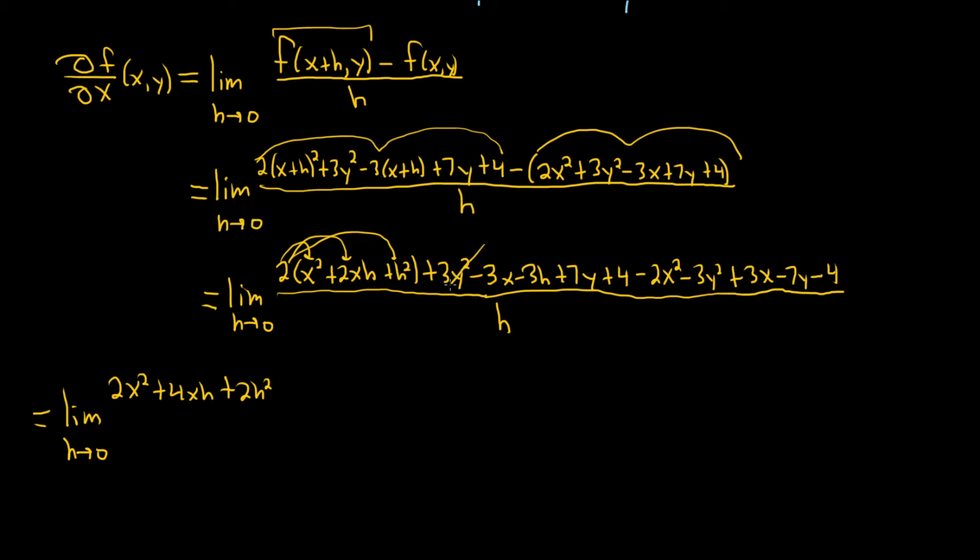So now let's look at 3y squared. Look. Uh, goes away. Negative 3x. Uh, goes away. Negative 3h does not go away. 7y goes away. 4 goes away. We still have the minus 2x squared.